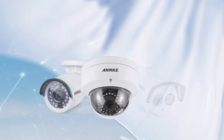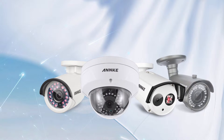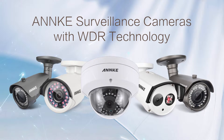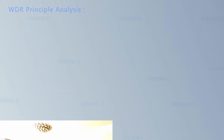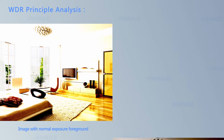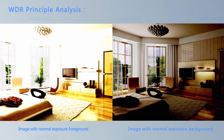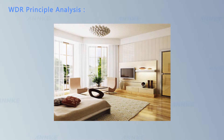Hey guys, this is an introduction on WDR technology and how a WDR camera generates better images than a standard camera. Now let's see how WDR works. WDR, short for wide dynamic range, is an advanced image processing technology used in security cameras. It composites both a short exposure image and a long exposure image of the same scene into one.